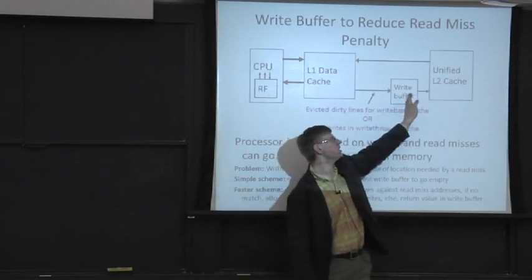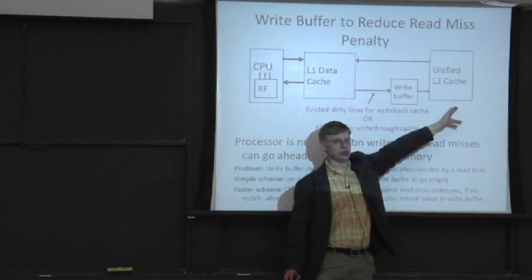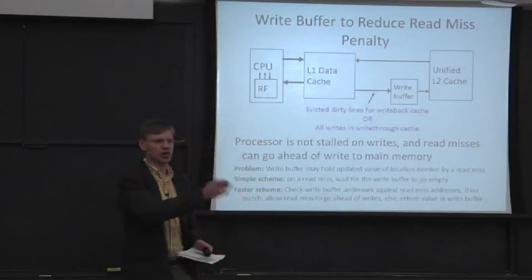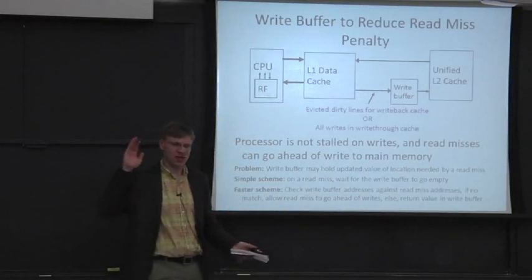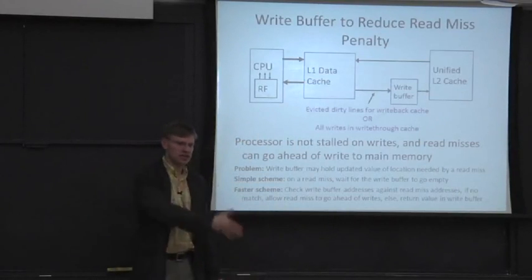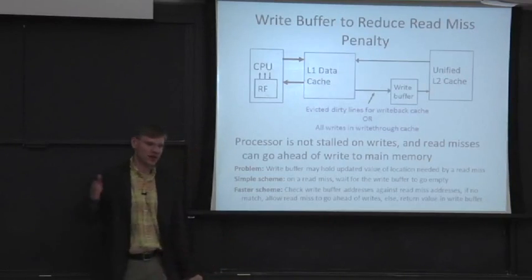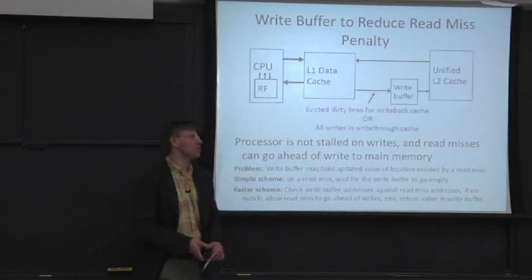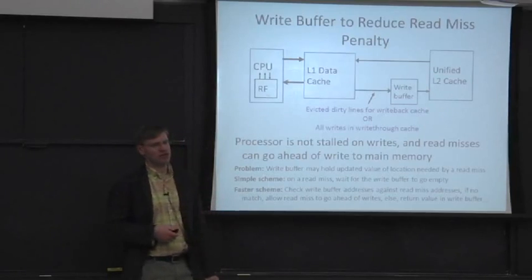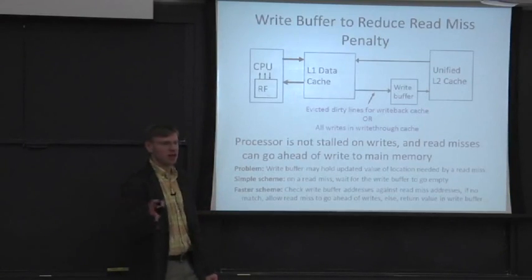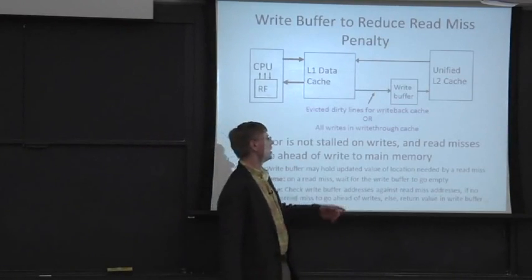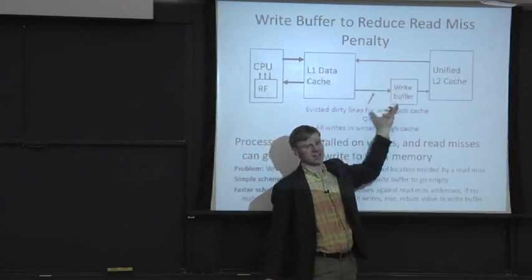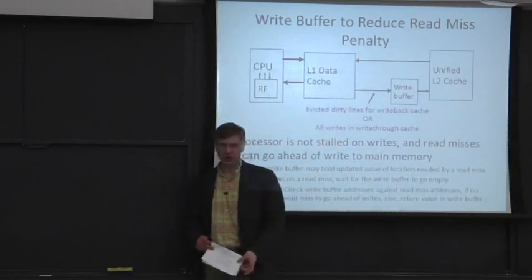This decreases the bandwidth you need at the L2. It's very common in code to write sequential addresses — for instance, adding two arrays means writing address after address to the destination. You don't want to fire up the L2 for every single store in that array operation if you have a write-through cache. So a coalescing write buffer saves bandwidth into your L2.